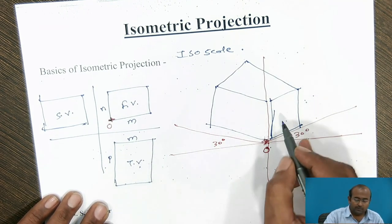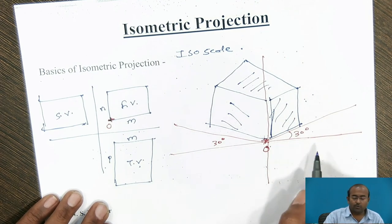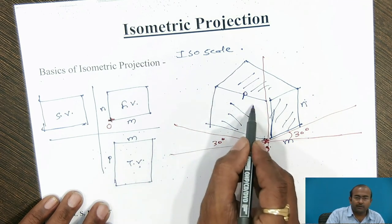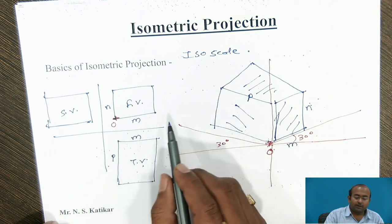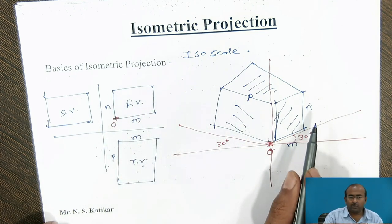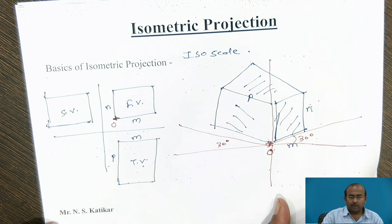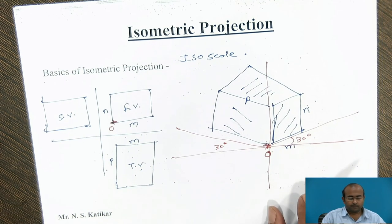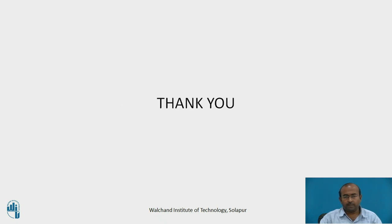Now you can visualize: this is the front view, this is the side view, and this is the top view. I plot dimensions m, n, and p accordingly — this length is p. Likewise, the isometric projection can be completed; 80% of the true scale is converted to iso scale, and all geometries are plotted on the 30-degree lines. With this, we have understood the isometric projection. References: Machine Drawing by Siddheswhar Shastri and Machine Drawing by P.S. Gill. Thank you.